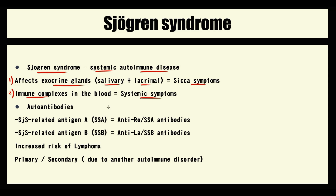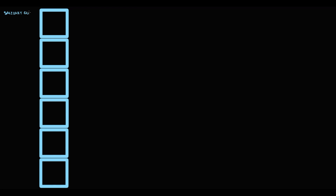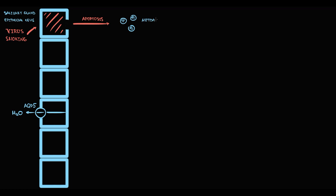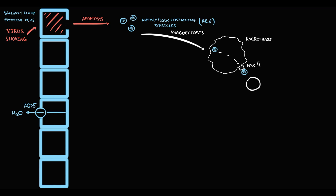Let's discuss the pathogenesis of Sjögren's syndrome. Let's take the salivary gland. Salivary gland consists of epithelial cells. Epithelial cells on their surface have a specific transporter called aquaporin-5. This transporter provides massive fluid secretion into the oral cavity. But sometimes viruses or smoking can cause severe damage to epithelial cells. As a result, the epithelial cell dies by apoptosis, which results in formation of autoantigen-containing vesicles. Tissue macrophages consume them and then present some parts of the vesicles on the MHC2 receptor to T helpers.